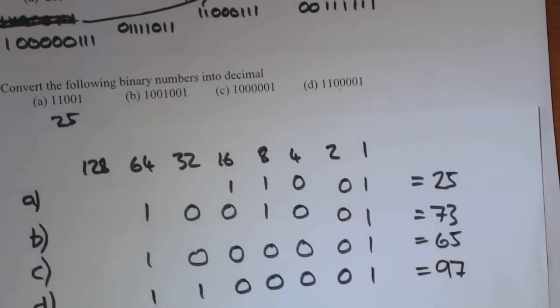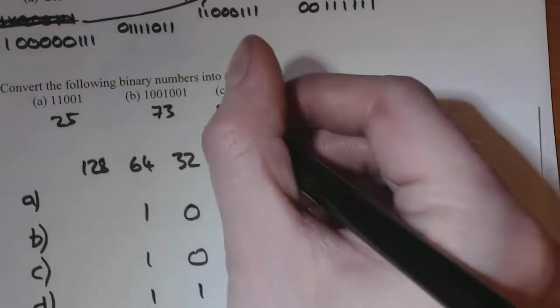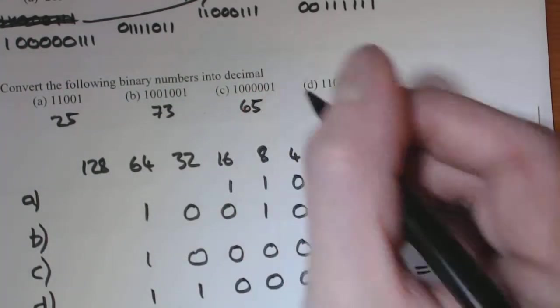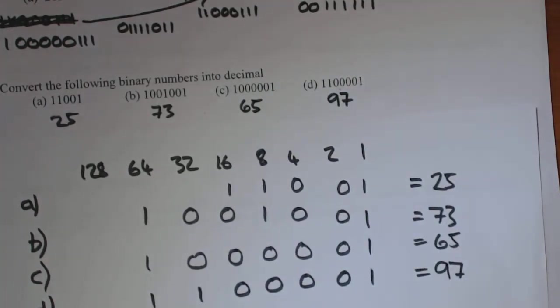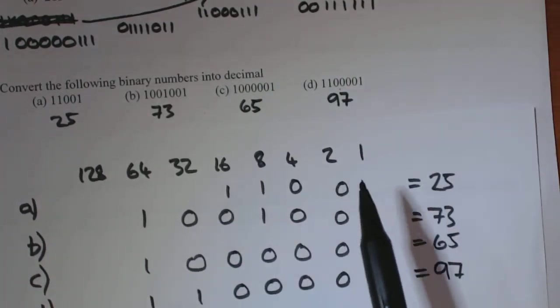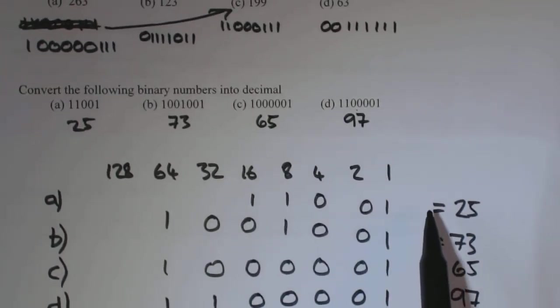So your answers for these ones. That's 25. That's 73. That's 65. And that is 97. None of them are unbaked exactly.